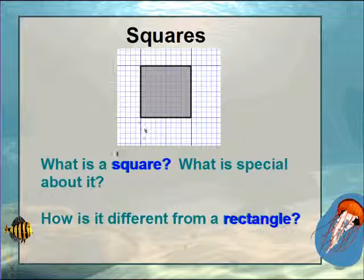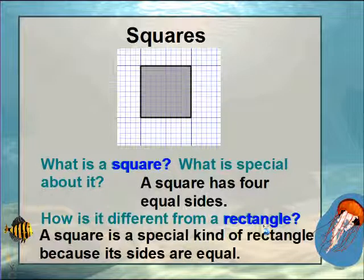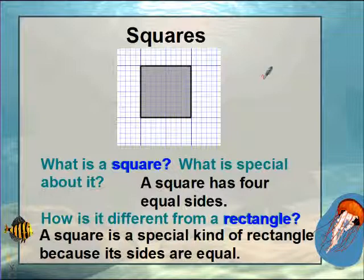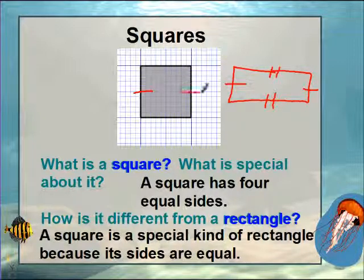So we already know about squares, and we want to know what is a square and what is special about it. A square has four equal sides — every single side is the exact same measurement. This is different from a rectangle. A square is a special kind of rectangle because all its sides are equal. A rectangle's definition is that opposite sides are equal, but squares are special because all their sides are equal.